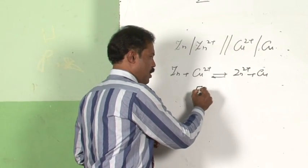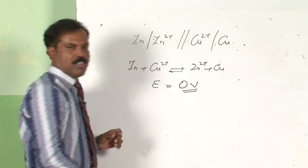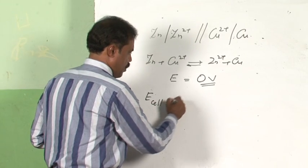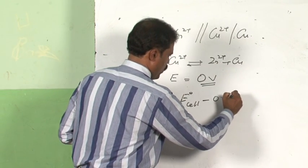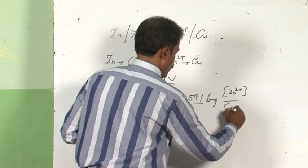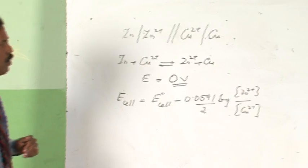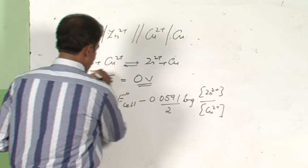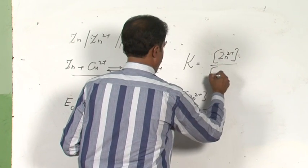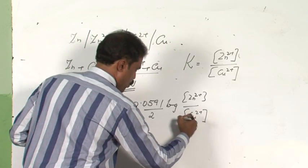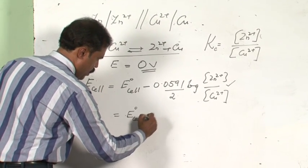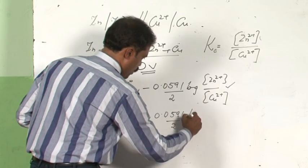At equilibrium, the EMF will not be there because electron transfer becomes zero, so E of the cell equals zero. We can write: 0 = E⁰ of the cell − (0.0591/2) × log([Zn²⁺]/[Cu²⁺]). Since the equilibrium constant K_c equals [Zn²⁺]/[Cu²⁺], we substitute K_c, giving: 0 = E⁰ of the cell − (0.0591/2) × log K_c.